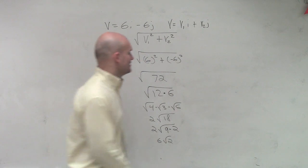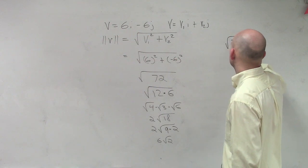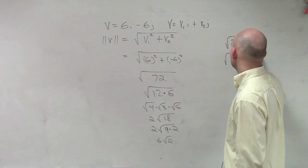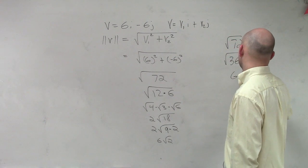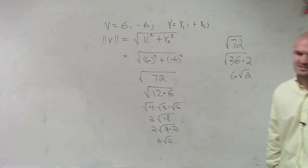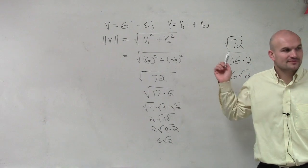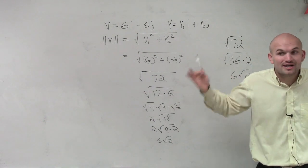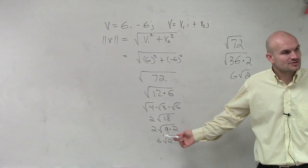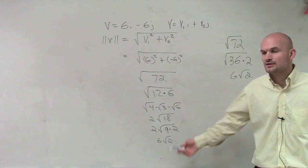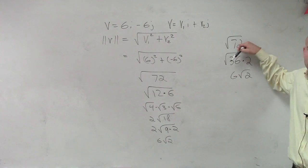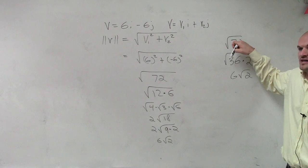So if we would have done this the other way, what you guys could notice is 72 could be broken down, ladies and gentlemen, into 36 times 2, right? Which gives us our same answer. But it's OK. If you can't think of 36, if you can just think of a number to do, that's fine. But you're just going to have to do a couple extra steps.